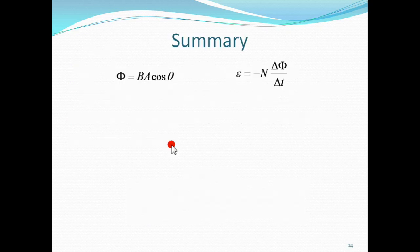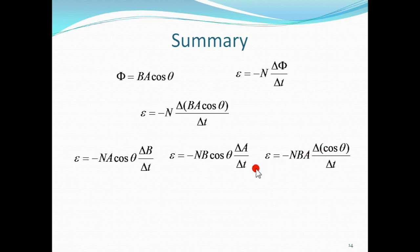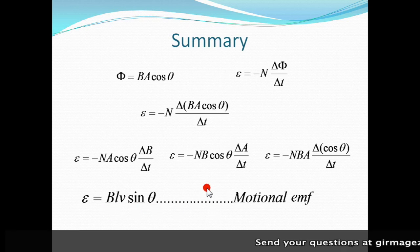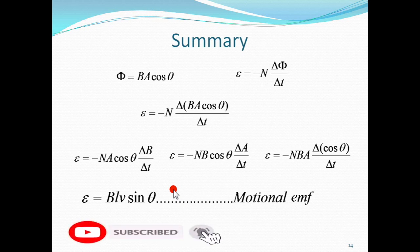In summary, magnetic flux is B A cos theta. The EMF depends on what changes: B, A, or orientation angle theta. These give us different formulas. When a conductor moves perpendicular to the magnetic field, the motional EMF is B L V sin theta. That covers the numerical examples of the process of electromagnetic induction. Please write your comments if you have any. Subscribe, like, and share. Thank you.